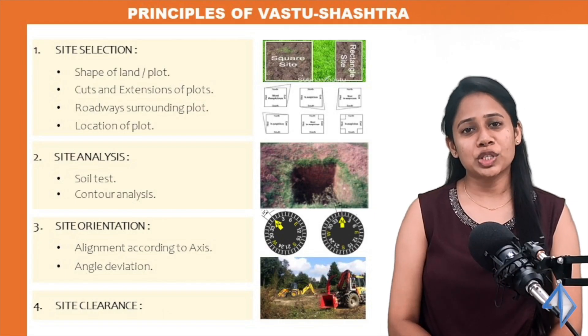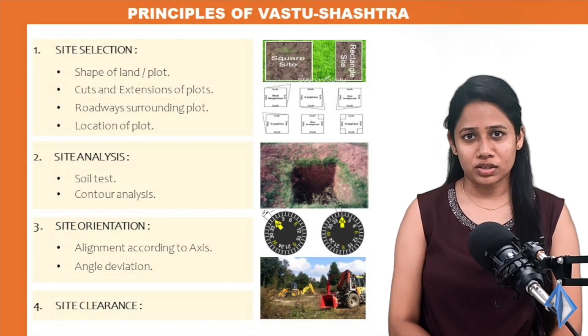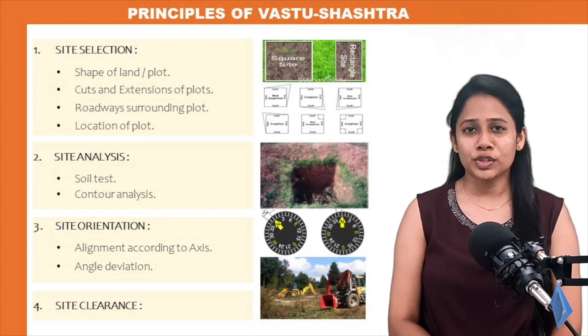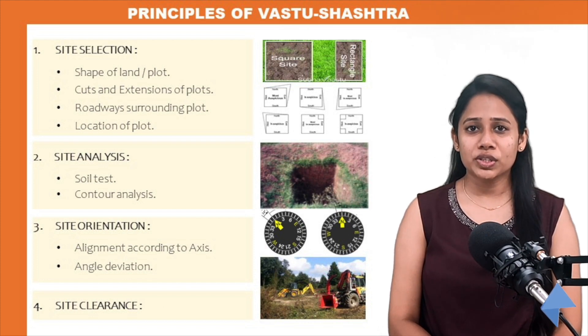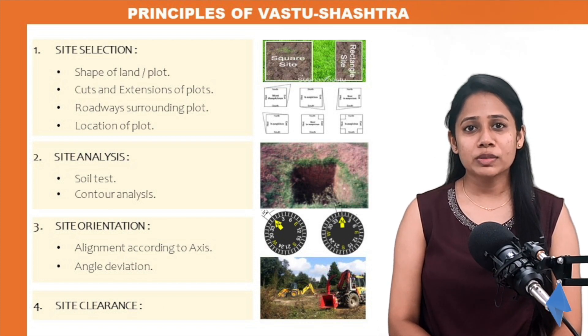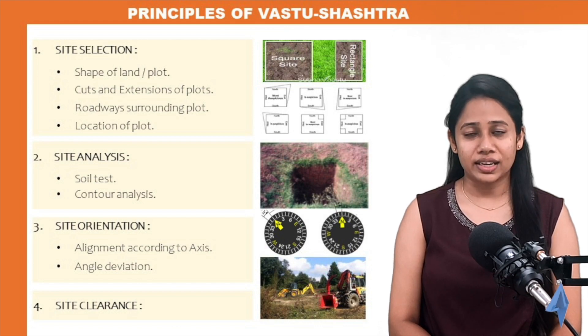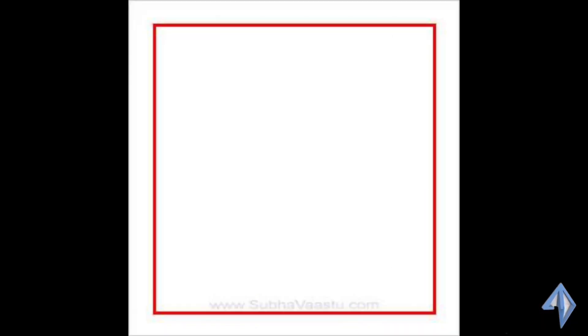So we have certain principles of Vastu Shastra. Let's do the first principle, that is site selection. Whenever you purchase a land, you should always purchase a regular shape of land, that is square or rectangle.